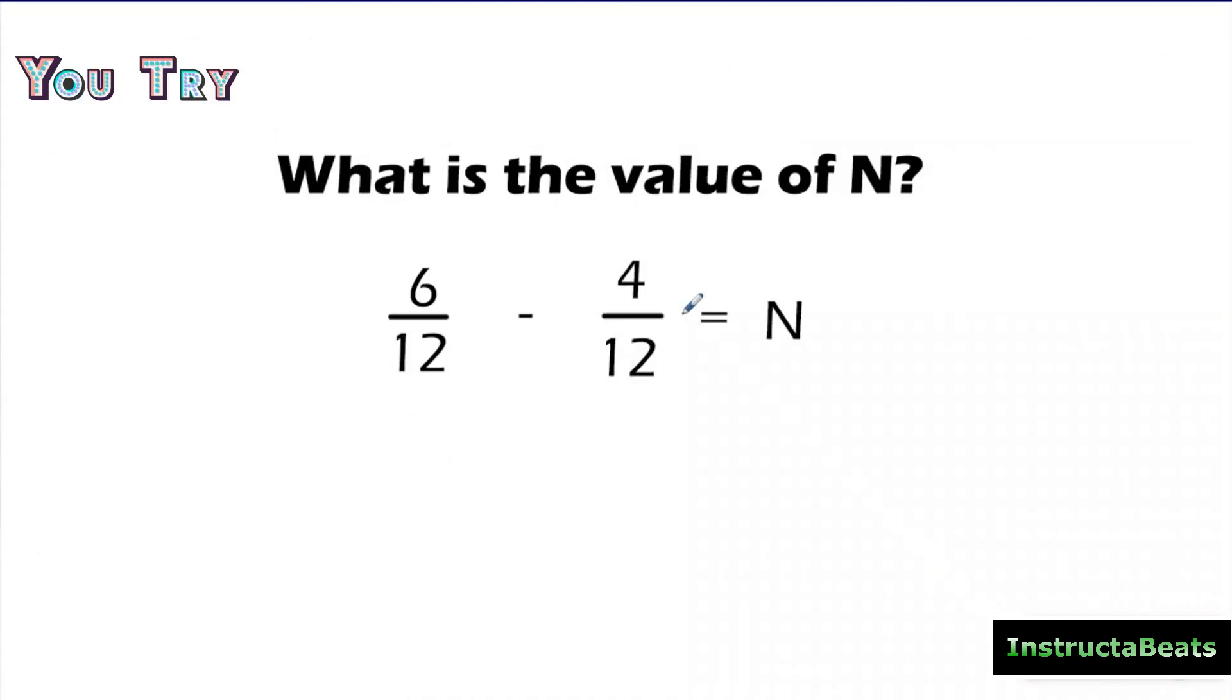Let's try this you try problem. Go ahead. You're going to pause the video. You're going to solve it and then push play to check your understanding. So hopefully you just paused it and solved it. Our question said, what is the value of N? So N is just a variable, kind of like a blank. And I'm just going to go ahead and solve this with the algorithm because I think it's super quick. My denominators are already the same. So I know that N, my denominator is going to be 12. 6 minus 4 is 2. So my answer is 2/12.